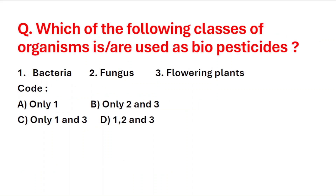Next question: which of the following classes of organisms are used as biopesticides? The three organisms given are: bacteria, fungus, and flowering plants. The correct answer is option D — all three: bacteria, fungus, and flowering plants are used as biopesticides.